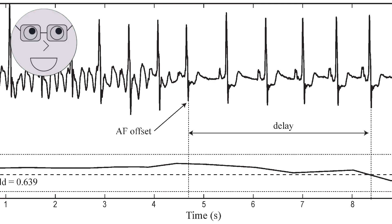The Symlet Wavelet is a family of wavelets that are similar to the Daubechies Wavelets but have more vanishing moments. Vanishing moments refer to the number of times a wavelet function crosses the x-axis. The more vanishing moments a wavelet has, the smoother it is.